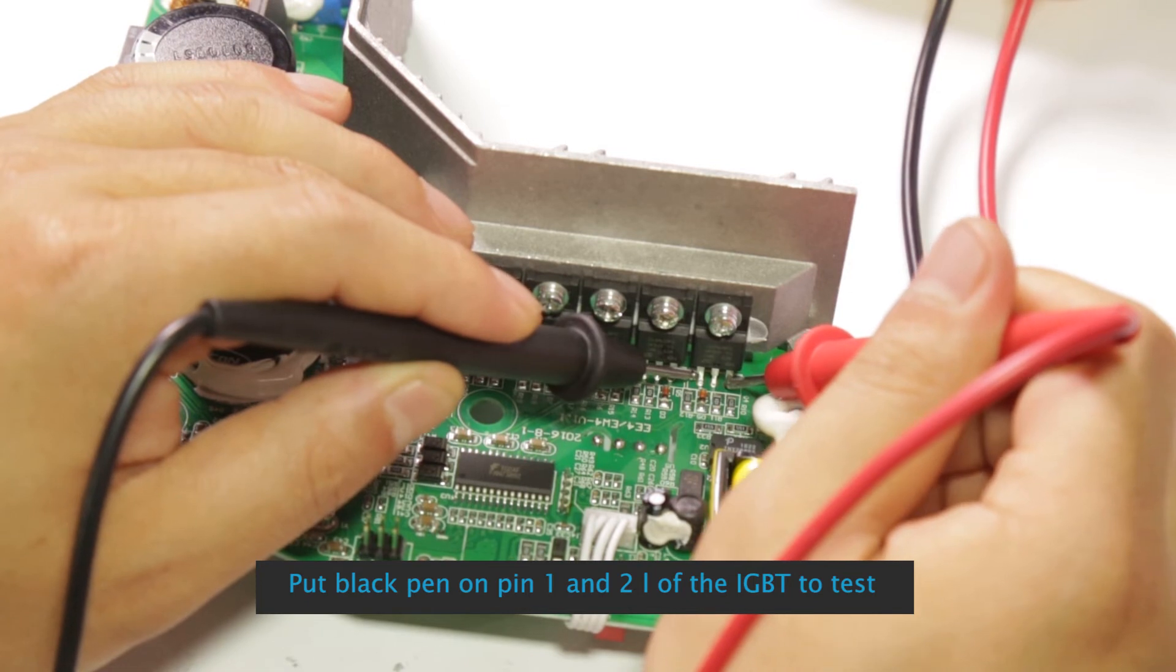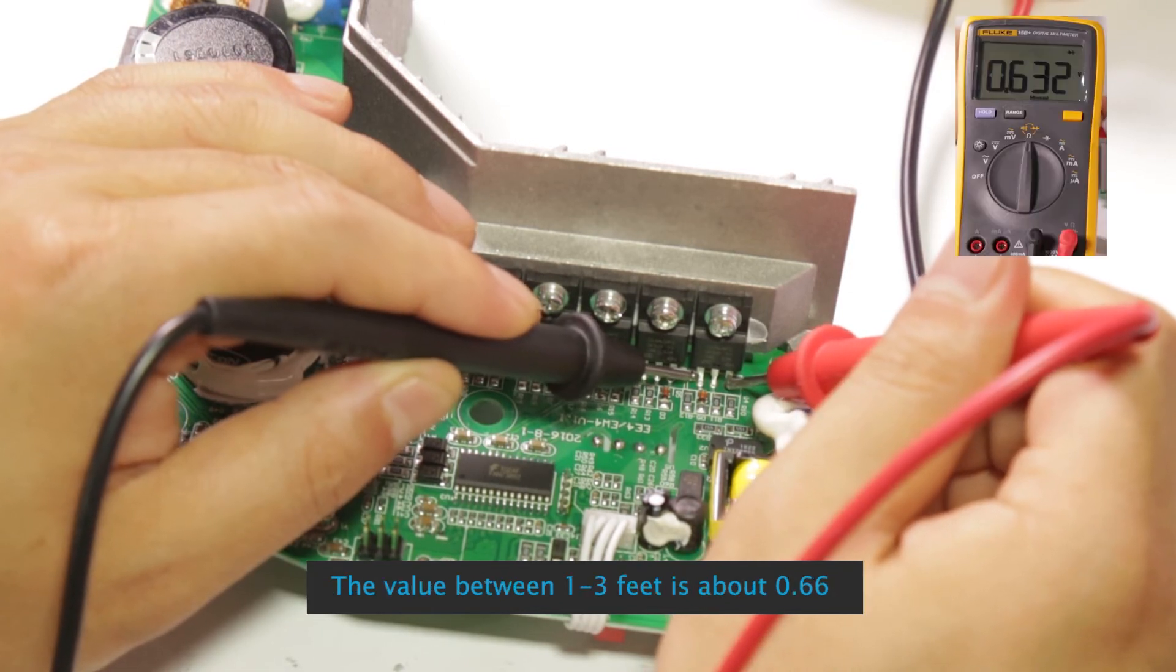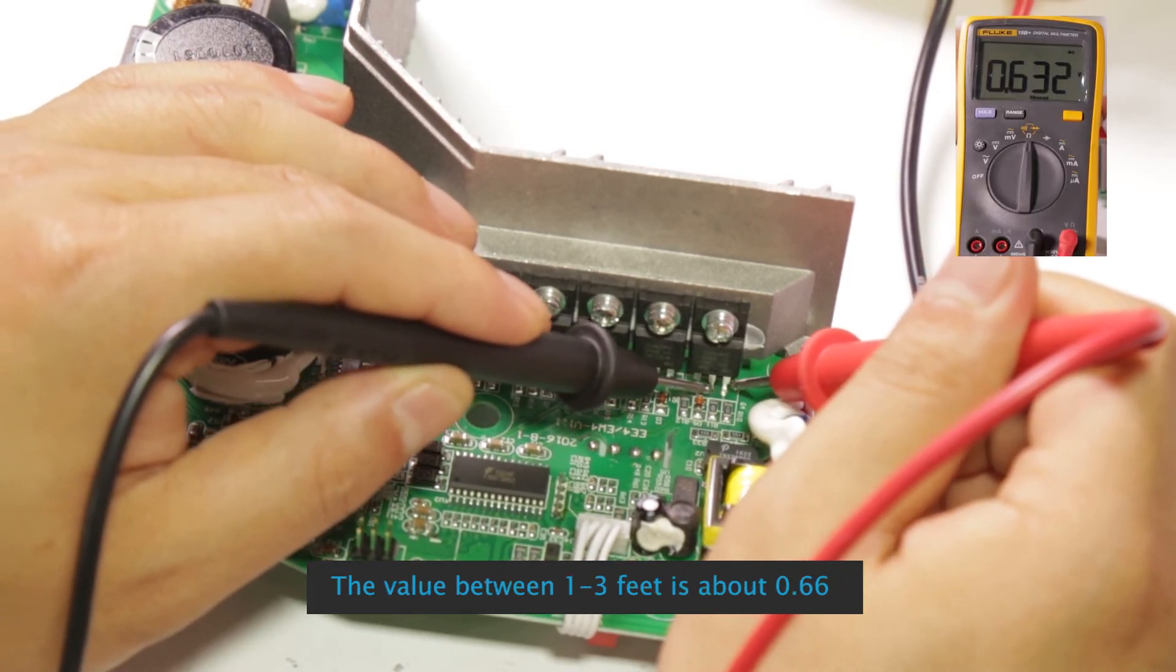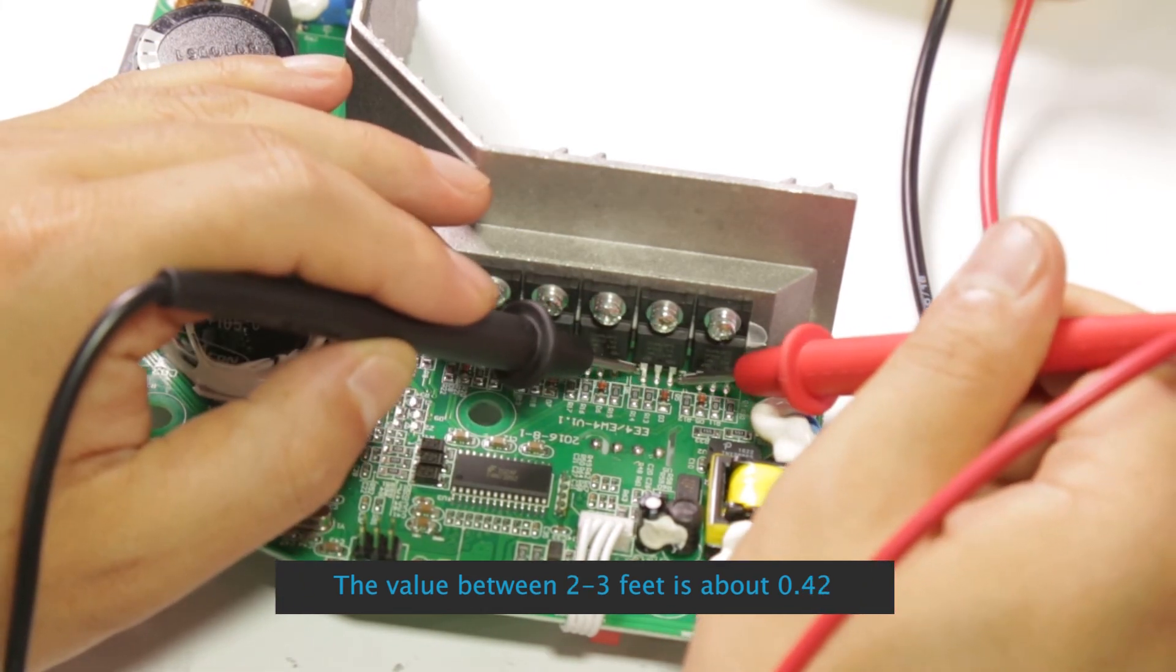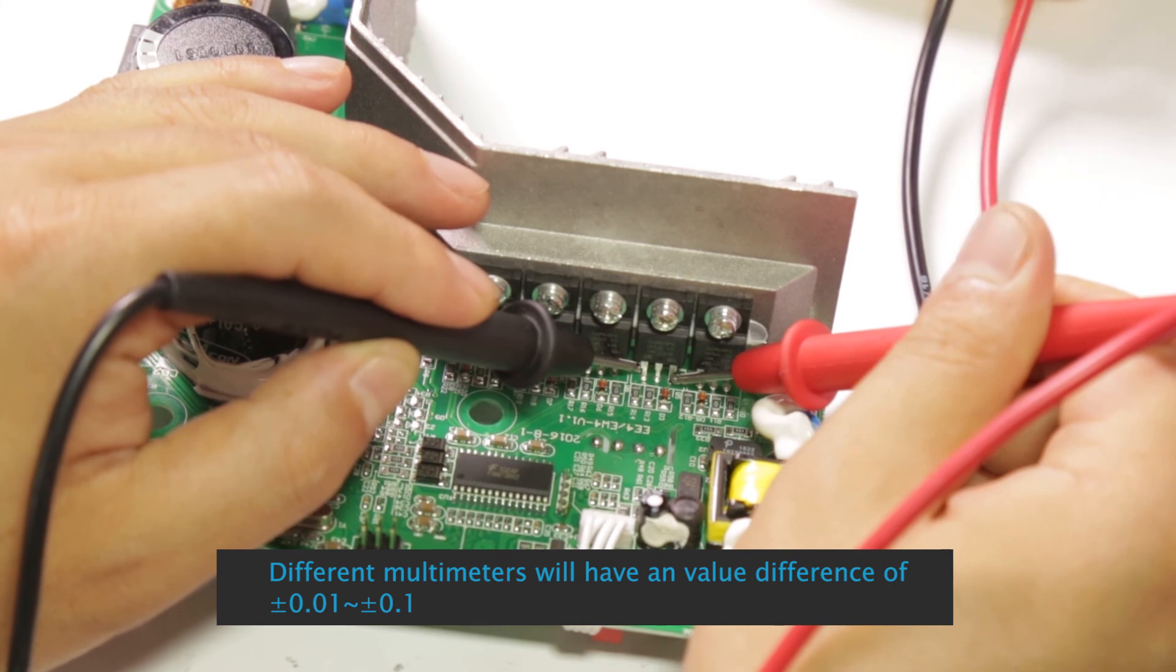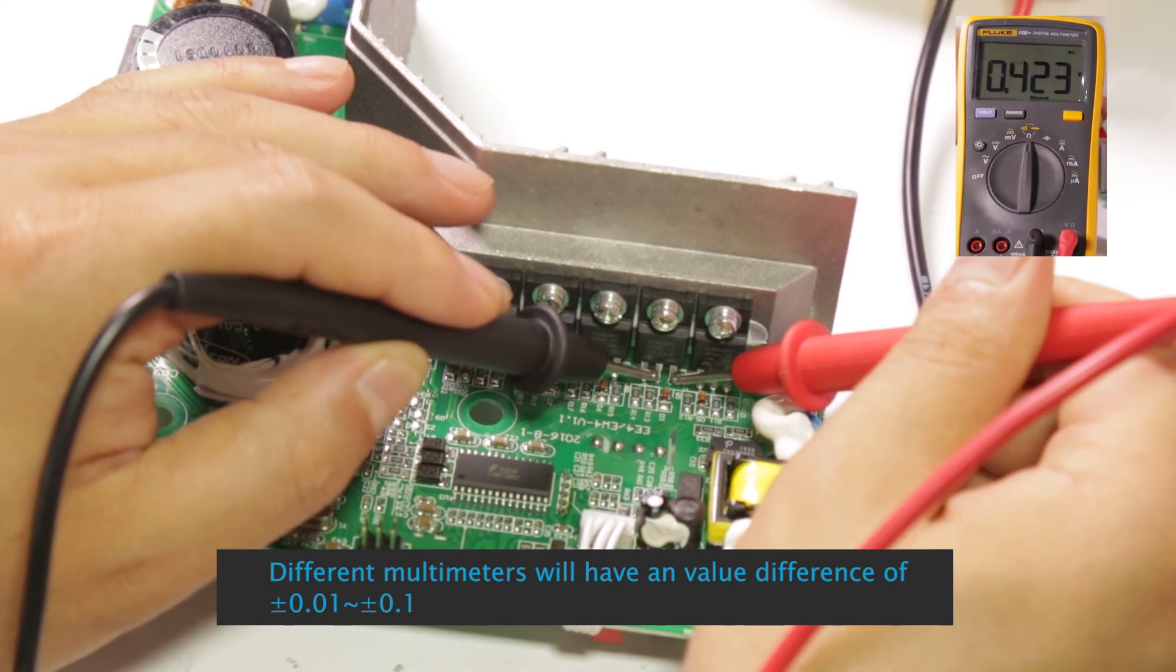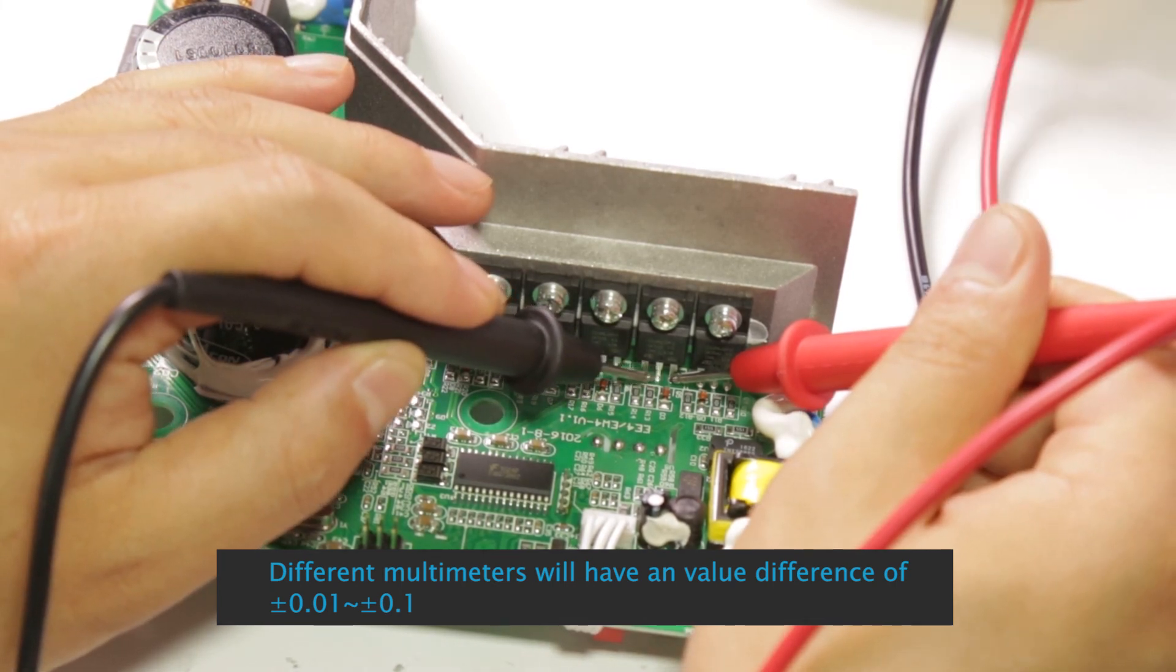The value between 1 to 3 feet is about 0.66. The value between 2 to 3 feet is about 0.42. Different multimeters will have a value difference of ±0.01 to ±0.1.